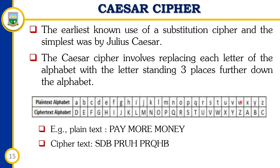For example, encrypting 'pay more money' using the Caesar cipher: P maps to S, A maps to D, Y maps to B, and so on. By replacing each letter with the third letter that comes after it, we can encrypt any information we want to hide from people.